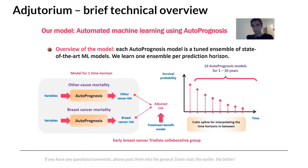An automatically generated non-linear survival formula is then fit to the model predictions in a post-hoc fashion — matching this non-parametric binary survival curve predicted by the machine learning model with a parametric formula for each patient's survival curve. This parametric formula is then used to predict survival in the Adjutorium interface.